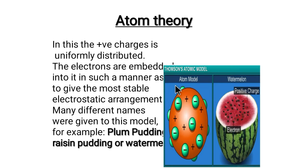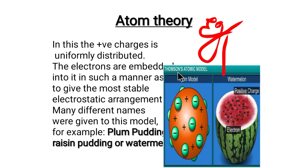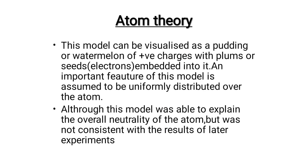This is the atomic model. For example, this is the main atomic model. This is a positive charge and a negative charge. It is called a plum pudding model, raisin pudding model, or watermelon model. There are different names for atomic models. This model can be visualized as a pudding of positive charges with plums, seeds, and electrons embedded into it.